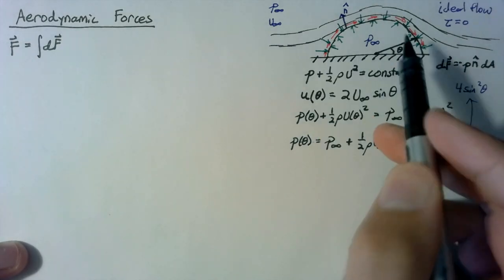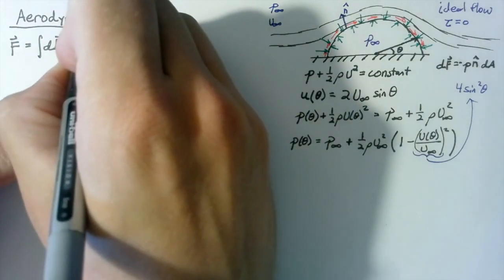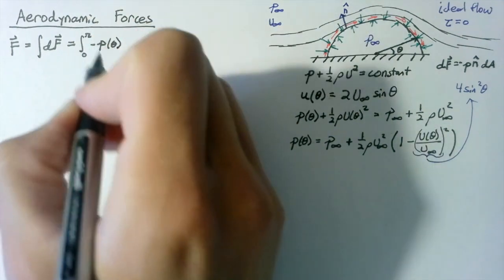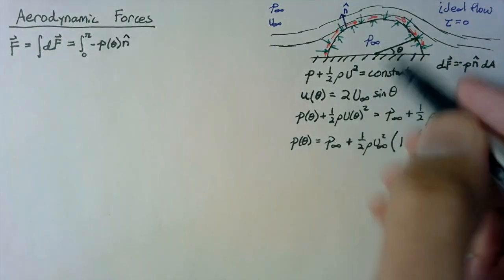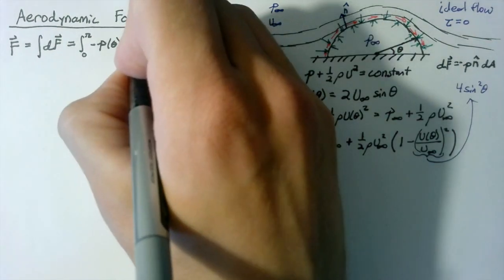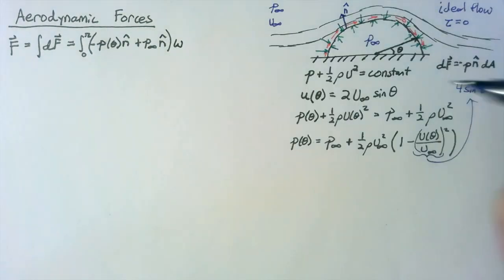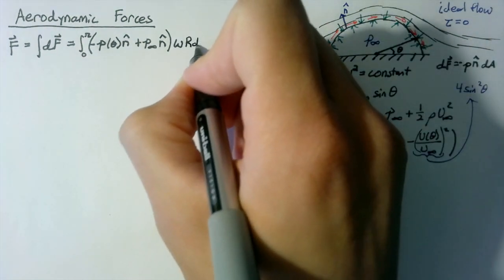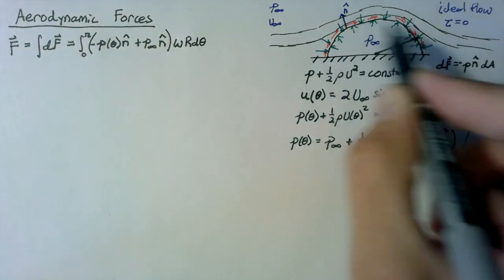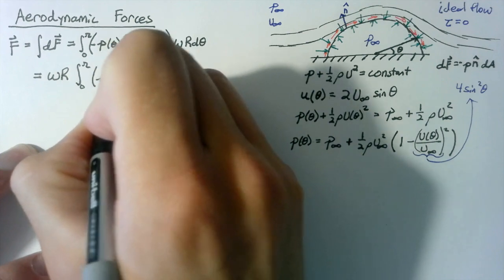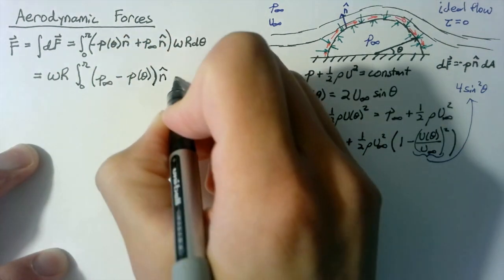In terms of our specific setup, we integrate from 0 to pi. The outside pressure pushing in gives a negative p(θ) times n̂, and p∞ pushing outward gives a positive p∞ times n̂, all multiplied by dA. Since we want to integrate over theta, we write dA as the width w times r times dθ, where r is the radius of our semicircle. Bringing out constants, the integrand simplifies to p∞ minus p(θ), multiplied by n̂ dθ.